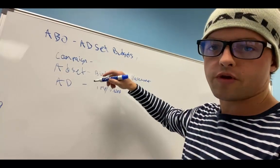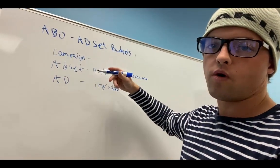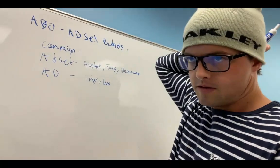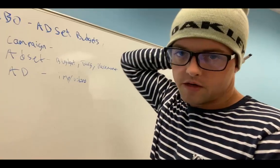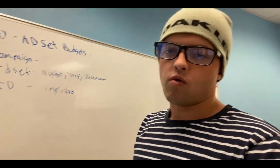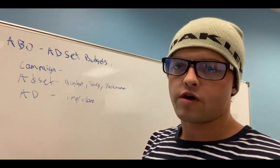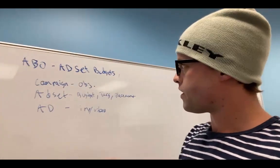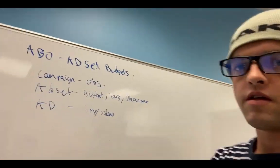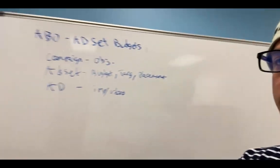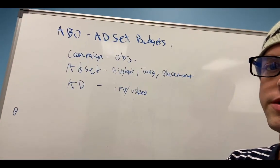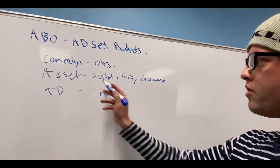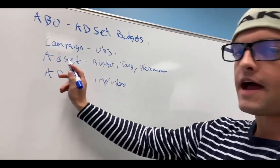The campaign level generally was just about what the objective was — like if you wanted to go for traffic or conversions. This is basically how things have traditionally worked, with the budget for the ad being set on the ad set level.